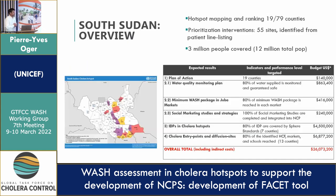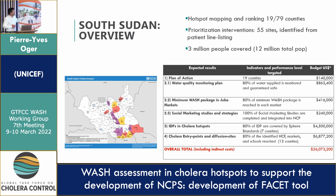Moving on to South Sudan, using hotspot mapping done by WHO: the same idea — packages of interventions specific to cholera and not only WASH. One specificity compared to Harare is the existence of IDPs, which introduces another type of package. Harare was much more peri-urban areas. In South Sudan, we ended up with a cost of 26 million dollars.